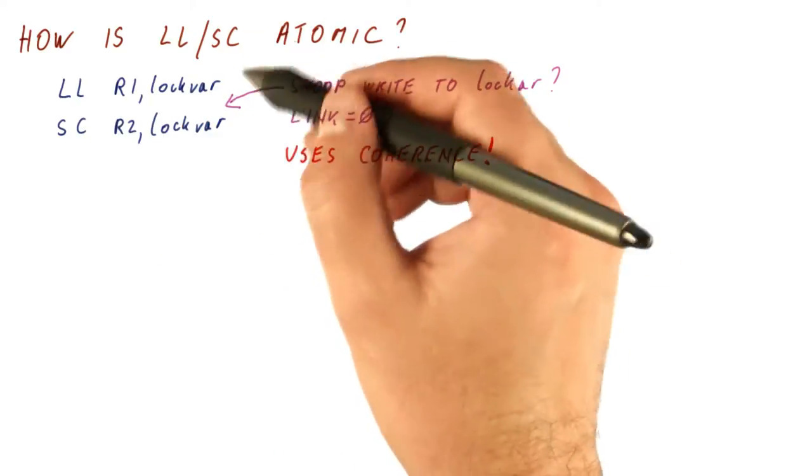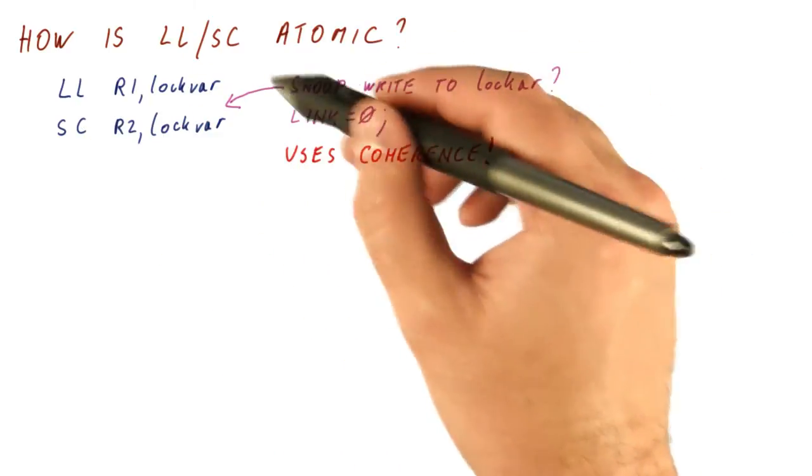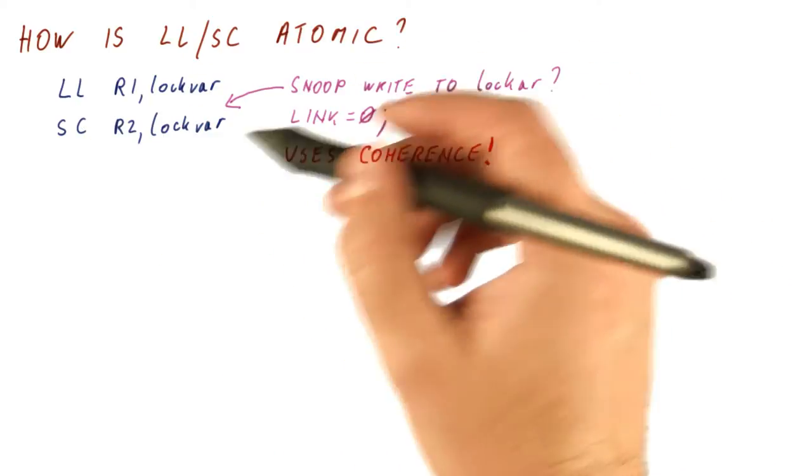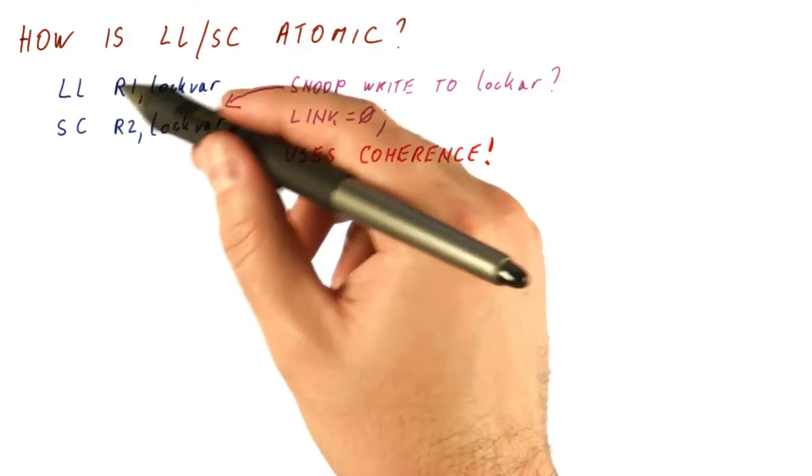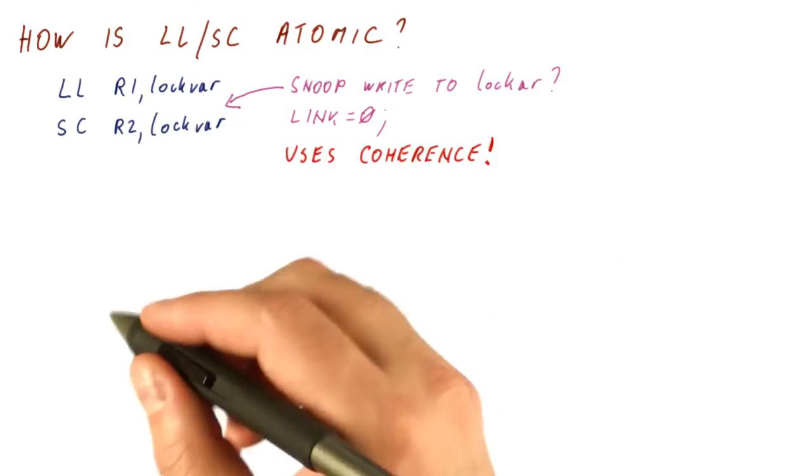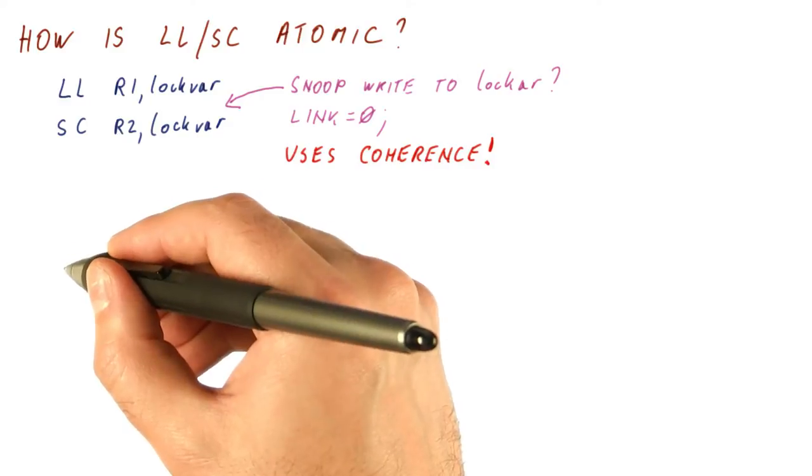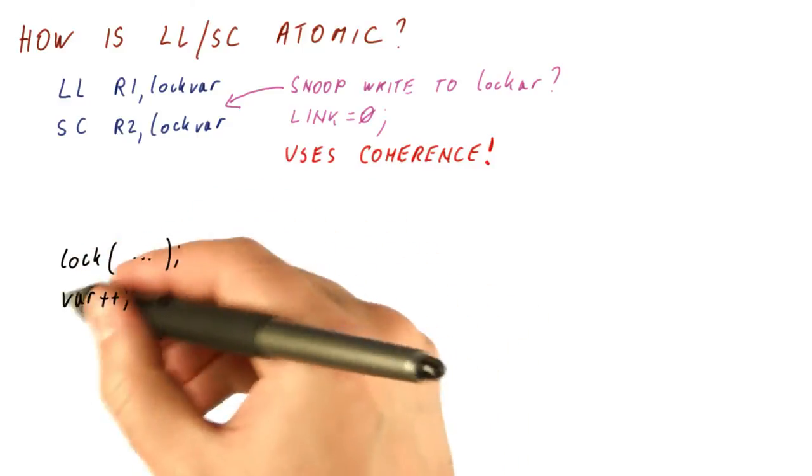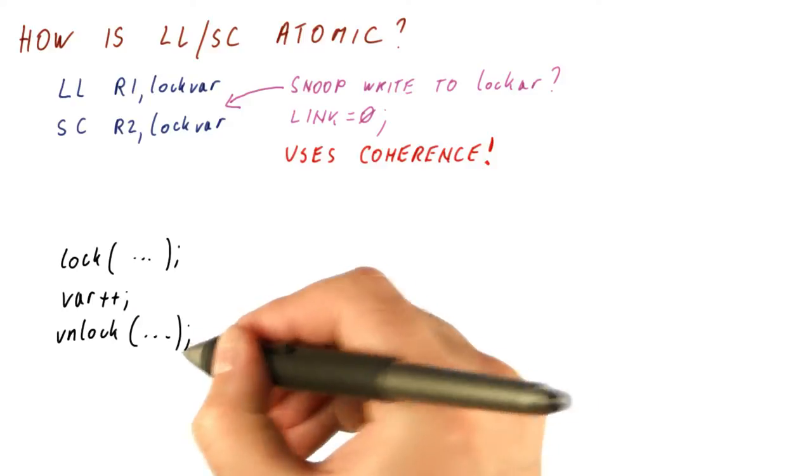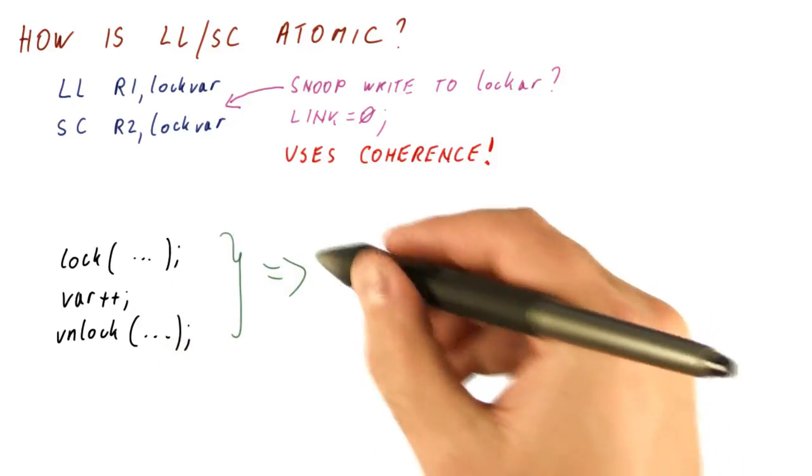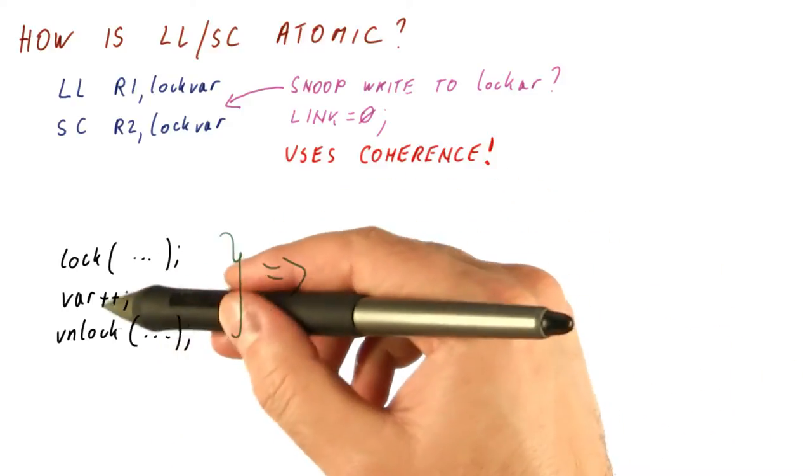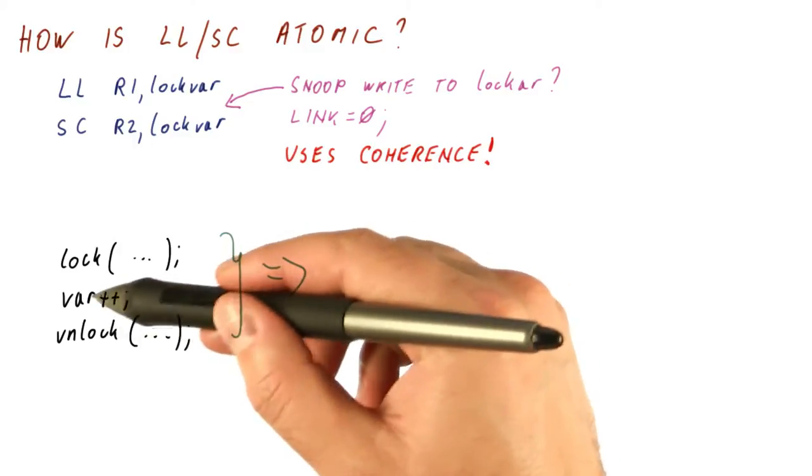Now note that the load link store conditional are atomic by themselves. We don't need actually to use a lock to make this atomic. So some of the critical sections that would just lock something, increment a variable, and then unlock the lock, can now directly be implemented using load link and store conditional on the variable itself.